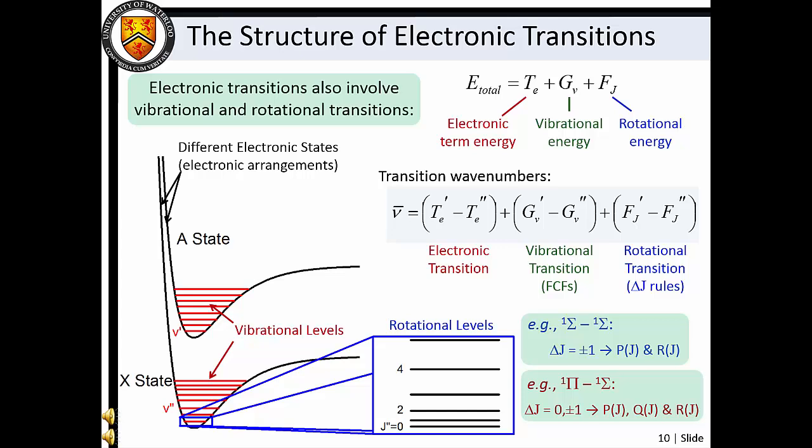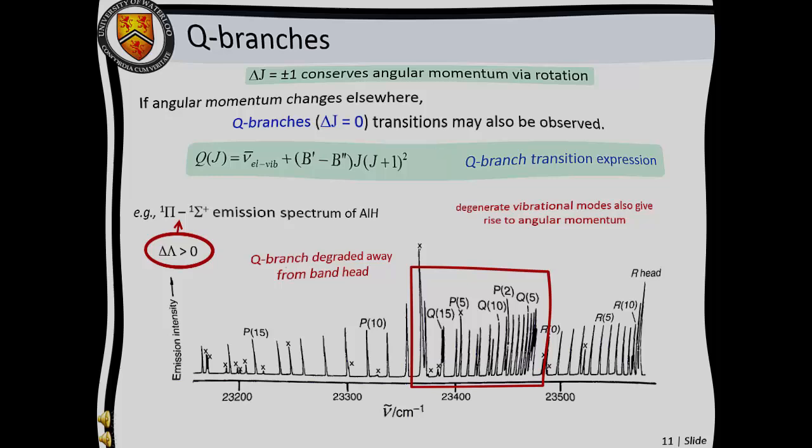To determine excited state molecular geometries, it is necessary to resolve and analyze rotational level structure. Ro-vibronic transitions are simply the change in electronic energy plus the change in vibrational energy plus the change in rotational energy, and transitions are subject to the combined selection rules. Note that for electronic transitions, it is common to observe a change in orbital angular momentum. In these cases, the regular delta J equals plus or minus one selection rule must be amended to delta J equals zero plus or minus one. Thus, Q branches may be observed in addition to the P and R rotational branches.